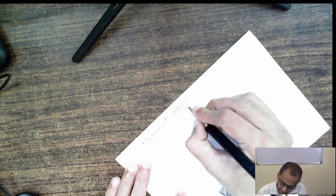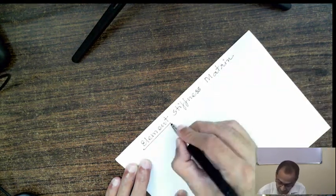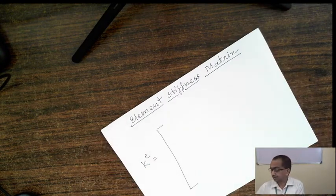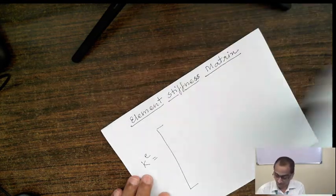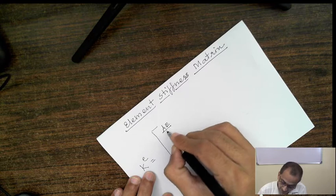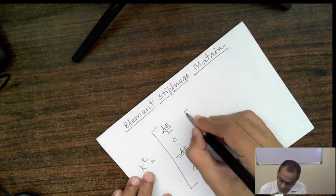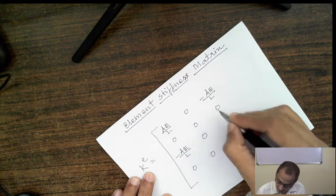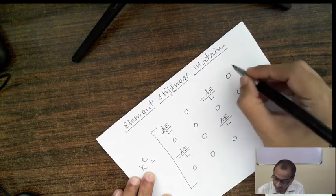Now I can write the element stiffness matrix for the truss element. It is a 4×4 matrix. The first column is: AE/L, 0, -AE/L, 0. The second column is: 0, 0, 0, 0. The third column is: -AE/L, 0, AE/L, 0. The fourth column is: 0, 0, 0, 0.